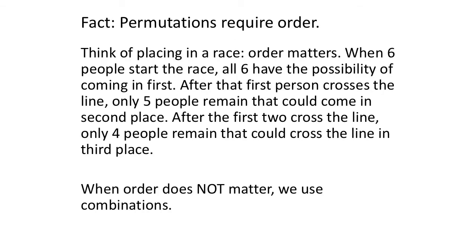Fact is, permutations require order. Ask anyone that has ever been in the Olympics. I think silver medalists are more disappointed a lot of times than bronze medalists. Order matters. What color of medal are you getting? Matters. So when six people start a race, all six have the possibility of coming in first. Once they come in, only five remain and so on. Only three people could come in fourth place. Only two people could have the option of coming in fifth. And always there has to be one that's last.